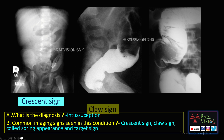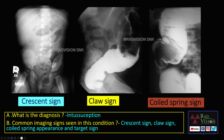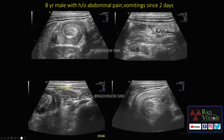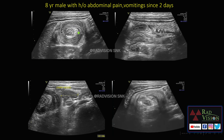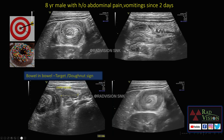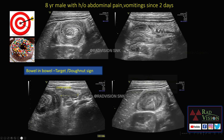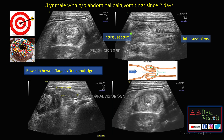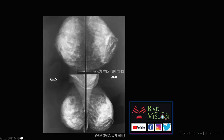On ultrasound, the other common appearance is bowel-in-bowel appearance, also known as the target appearance or donut sign. You can see the intussusceptum and the intussuscipiens. The lymph nodes are one of the causes of intussusception. So this is a case of intussusception.